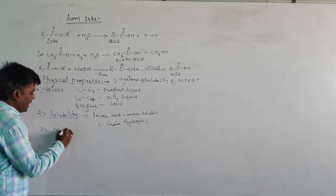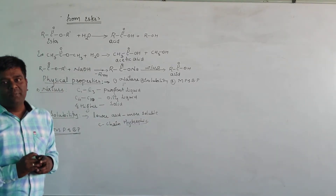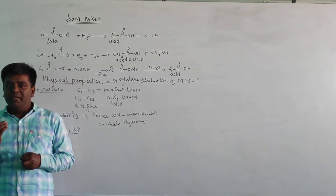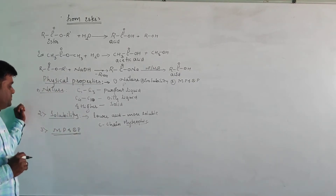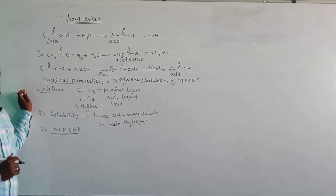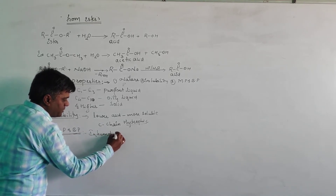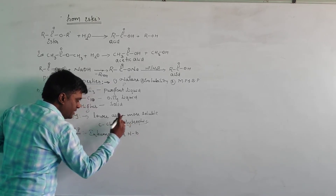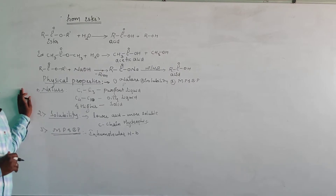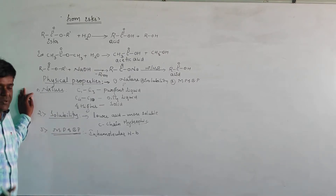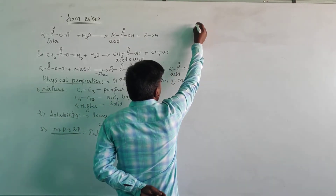The third property is melting point and boiling point. Generally, as the number of carbon atoms in the parent chain increases, the boiling point and melting point increase. Increasing branching decreases the boiling point and melting point. Carboxylic acids are involved in intermolecular hydrogen bonding, and because of this intermolecular hydrogen bonding, carboxylic acids have greater boiling points.